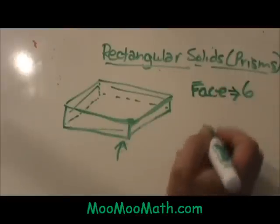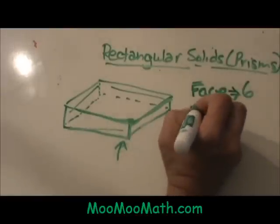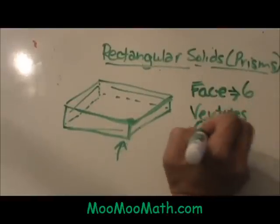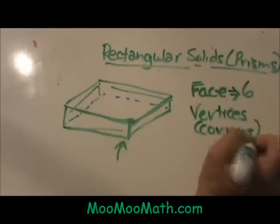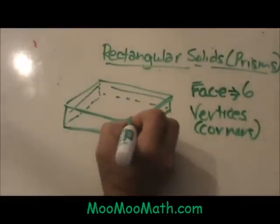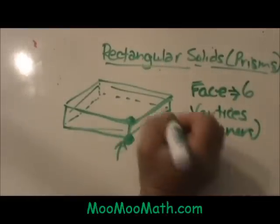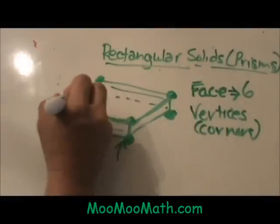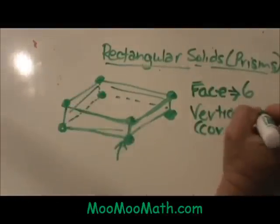Now it also has what we call vertices. Vertices is a fancy word for corners. That is a good way to remember how many corners does it have. Counting around, this one has eight vertices.